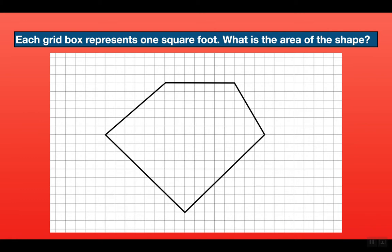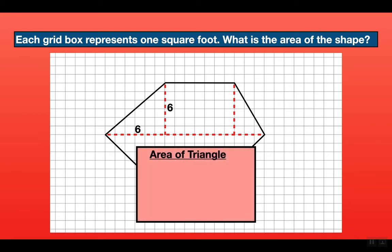There are other methods you could use, but I think dividing into simple shapes is the best way to keep it simple. If you divide it this way you'll have three triangles and one rectangle. Let's start by getting the area of the triangle on the top left. The base of that triangle is 6 units long and the height is also 6 units long. The formula for the area of a triangle is area equals one-half times base times height. So we do one-half times 6 times 6, giving us an area of 18 square feet.